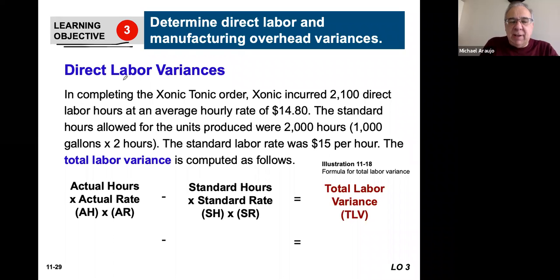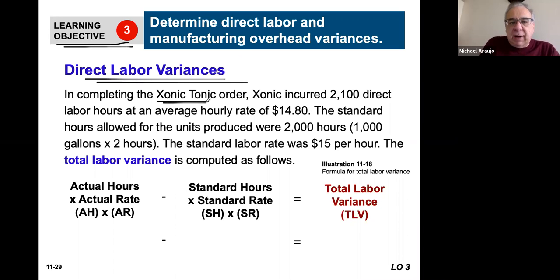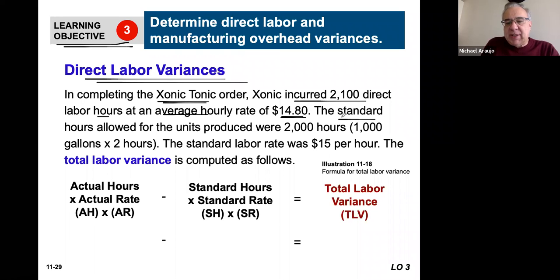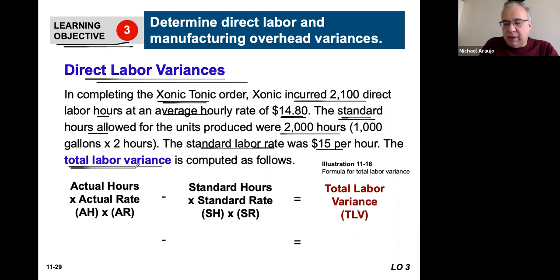So a direct labor variance is what's looked at here. We're still looking at Zonic Tonic. They incurred 2,100 direct labor hours at an average rate of $14.80. However, the standard hours that were allowed were 2,000, and the standard labor rate was $15. So we have to calculate the variance — the total labor variance.